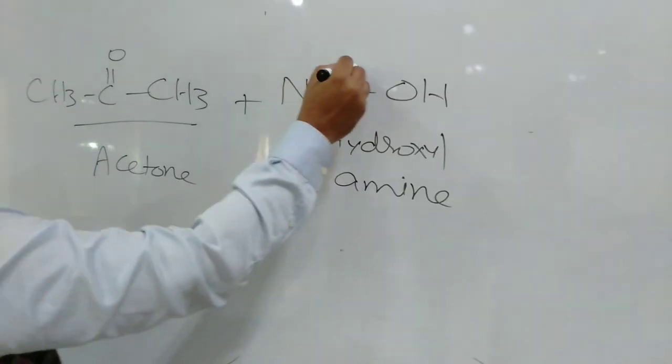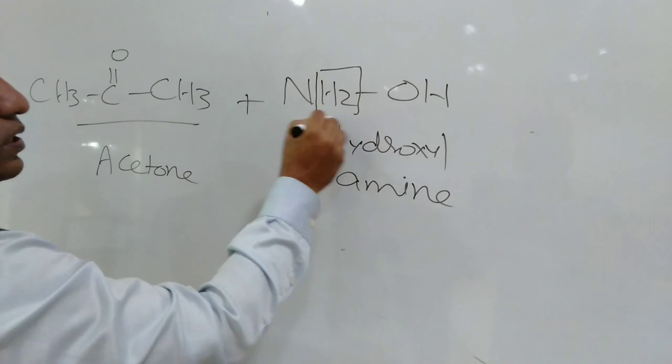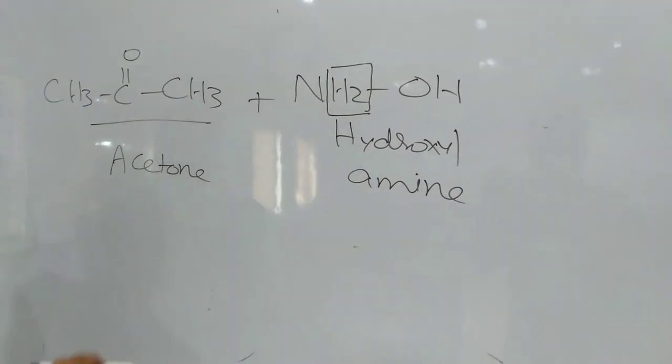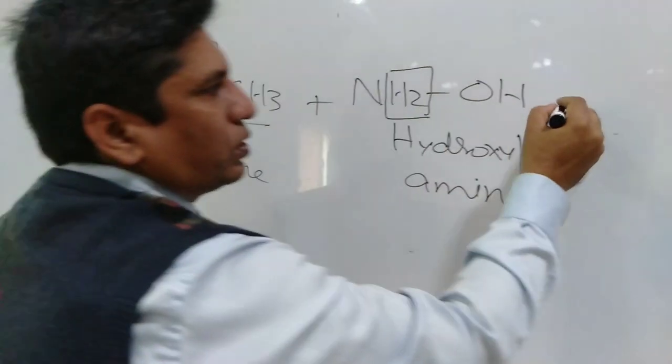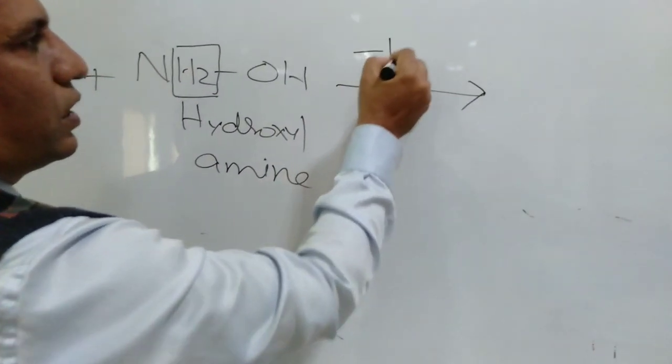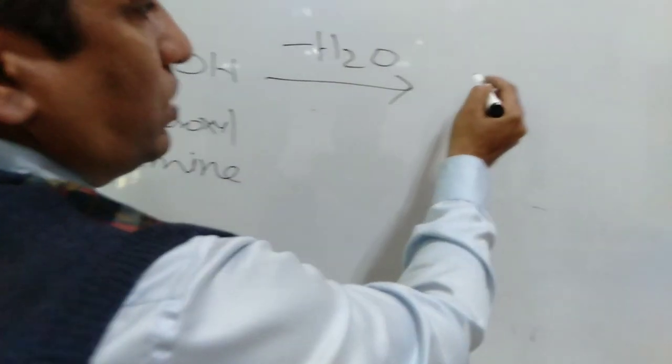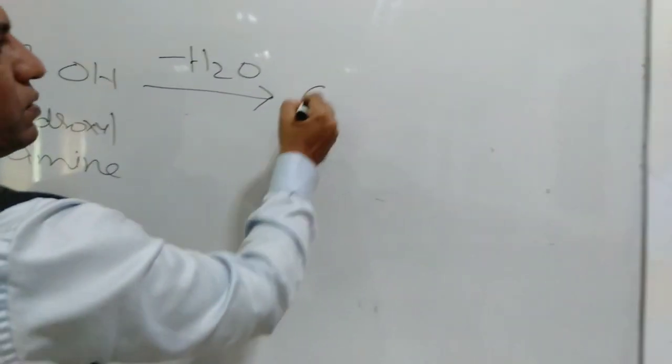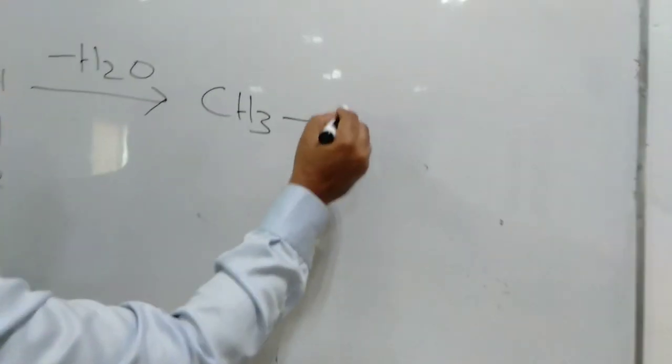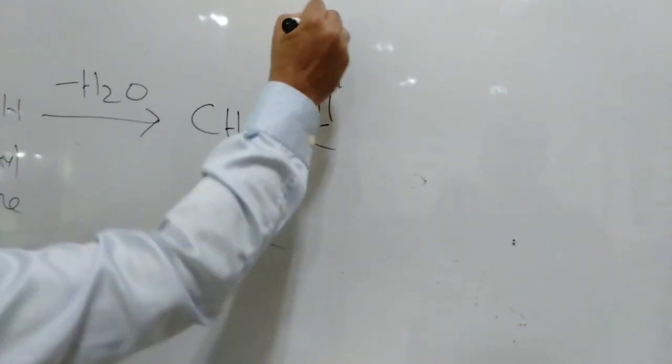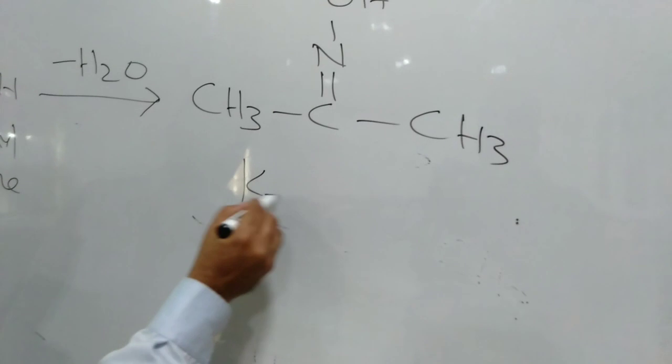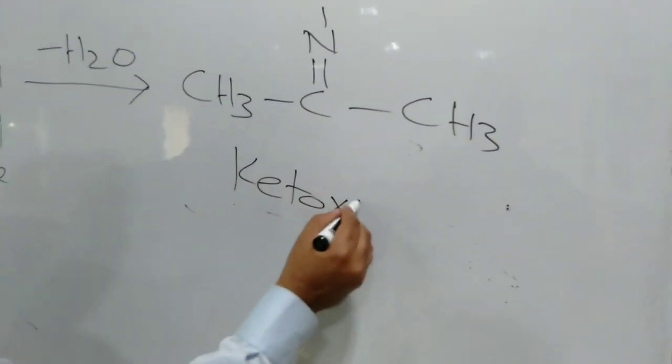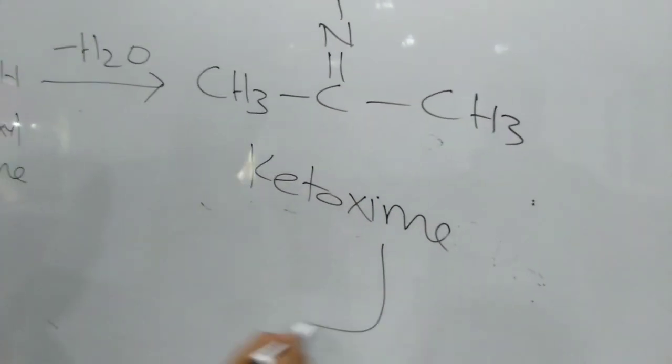H2 is removed from amine of the nitrogen and oxygen is removed from ketone, so a water molecule is left behind as a by-product. So our ketoxime is formed: CH3-C=N-OH. That is called ketoxime, and ultimately that ketoxime is converted into amide.